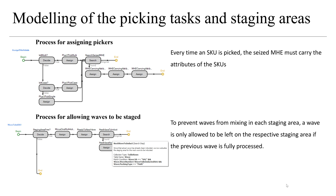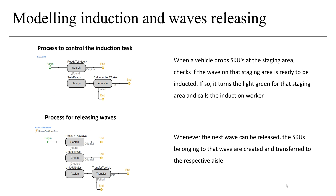The overall workflow depends on the characteristics of the SKU. Every time an SKU is picked, the seized material handling equipment must carry the attributes of that SKU. To prevent waves from mixing in each staging area, a wave can only be left on its respective staging area if the previous wave is fully processed. When a vehicle drops SKUs at the staging area, it checks if the wave is ready to be inducted — if so, it turns the light green and calls the induction worker. Whenever the next wave can be released, SKUs belonging to that wave are created and transferred. If a picker reaches capacity or picks all SKUs of the wave, they go to the staging area to drop items. If items there belong to a different wave, the picker waits until that wave is inducted.